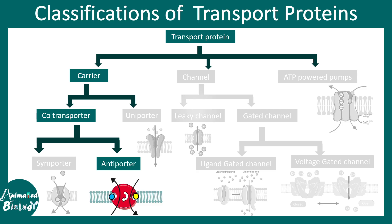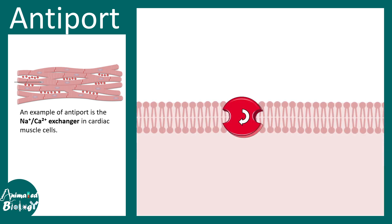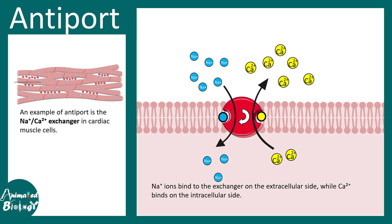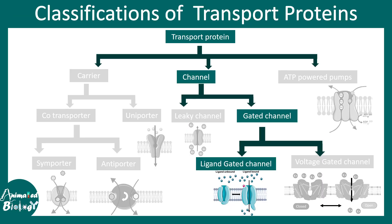Next we'll talk about antiporters, where the direction of transport is opposite. An example can be found in cardiac muscles: the sodium-calcium exchanger. Here, sodium ions bind to the exchanger on the extracellular side while calcium ions bind from the intracellular side. Both ions are bound from different sides of the membrane. Sodium comes in while calcium moves out, and this is triggered by a conformational change at the protein level.